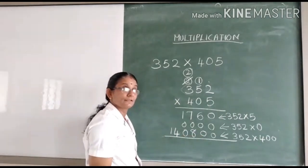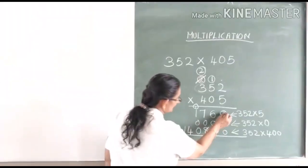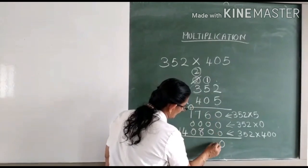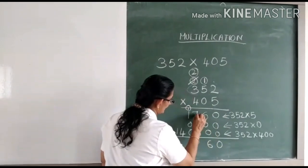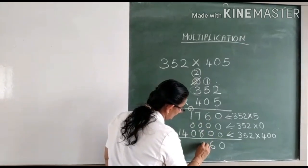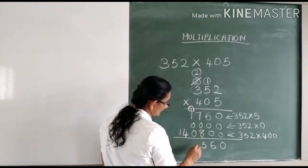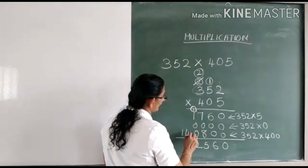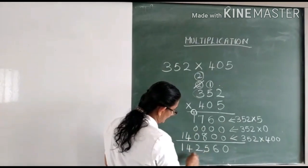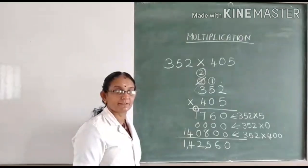The last step is to add all the products. Zero plus zero plus zero is zero. Six plus zero plus zero is six. Seven plus zero is seven. Seven plus eight is fifteen — five is written here and one is carried over. One plus one is two, and four. So the answer is one lakh forty-two thousand five hundred and sixty.